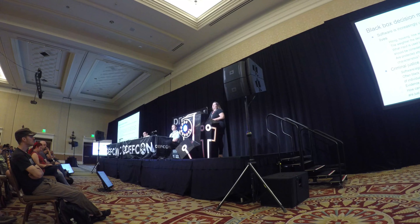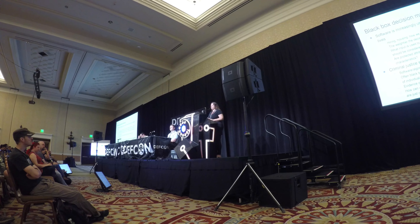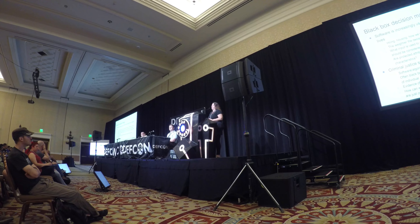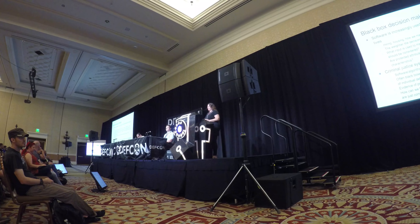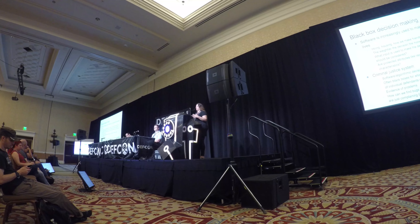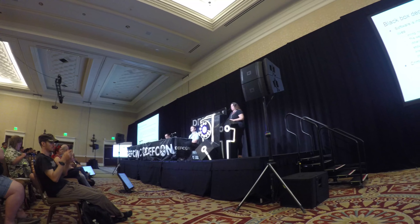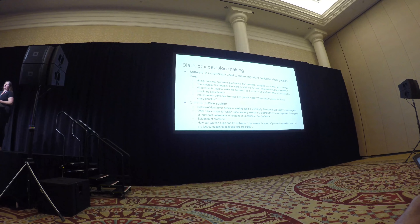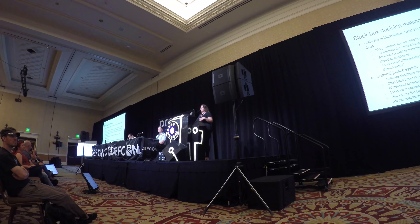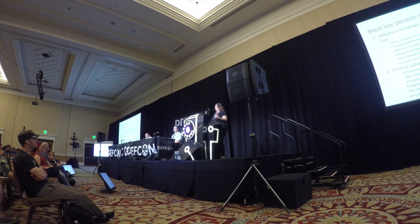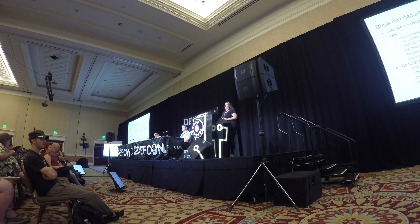What input is being given to that decision? Is the decision correct for whatever metric you would like to measure it by? Is there other information that really needs to be considered that's not being considered? What kind of bias is involved in that decision? Are there protected attributes being considered, like race and gender? Or even if those attributes are not considered directly, what about proxies for those characteristics that are just as effective?